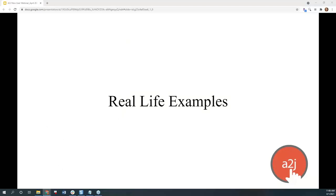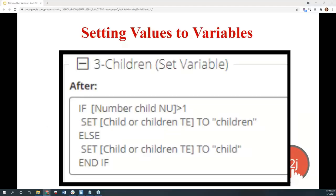Now let's look at some real-life examples. The first example is writing a condition that will set the correct form of a noun — either singular or plural — based on the end user's answer about how many of something they have. The real-world example is using the correct form of the word 'child' or 'children' in a subsequent question. Using the variable number_child, you evaluate whether the number is greater than one. On the next line, you set the variable child_or_children_TE to 'children' if the condition is true, or else set it to 'child' if they only have one.